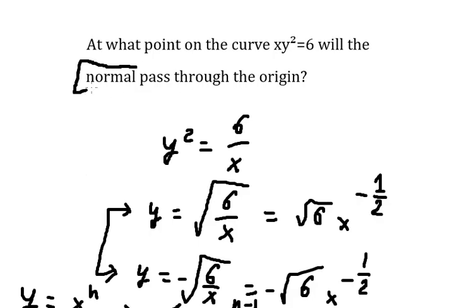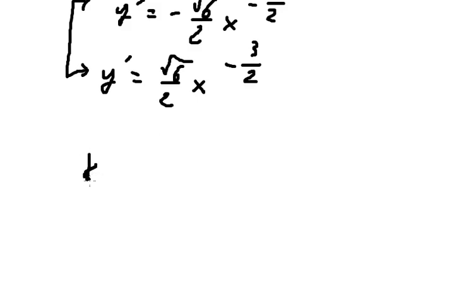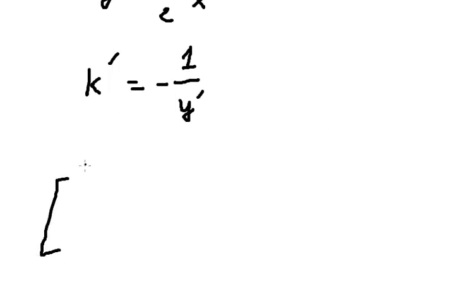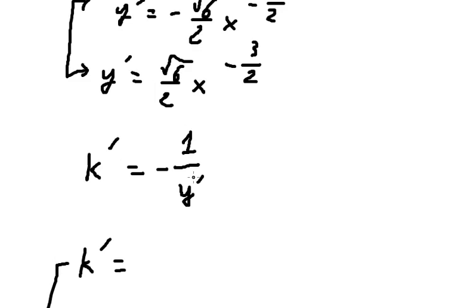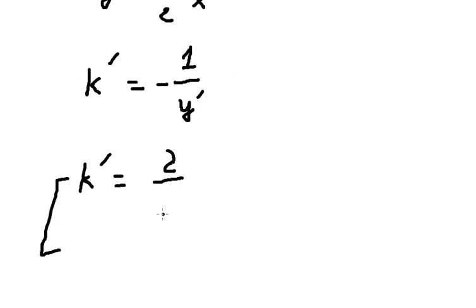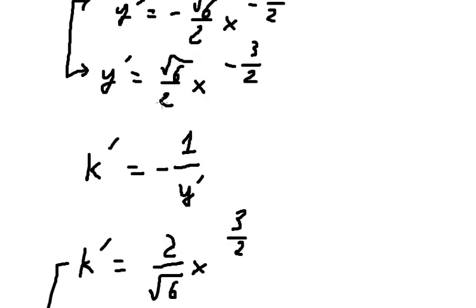So they asked about the normal, so the formula of the normal is here. I will mark this value here and this value here. That should be about 2 over the square root of 6, times X to the power of 3 over 2. After substituting, we swap the numerator and get this form.